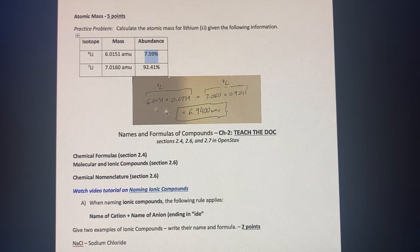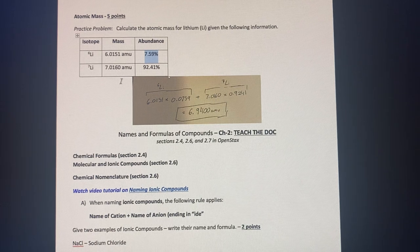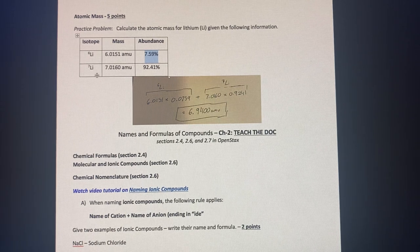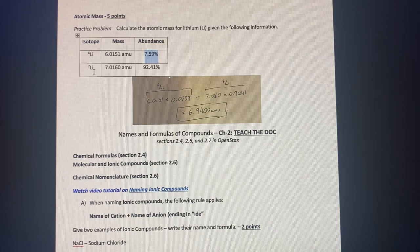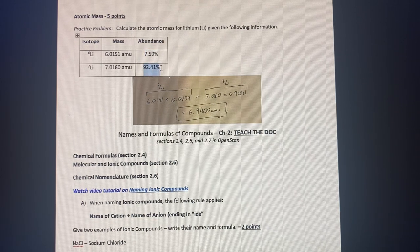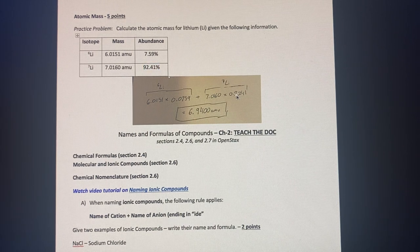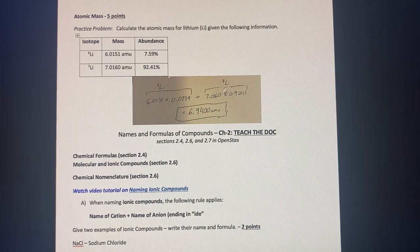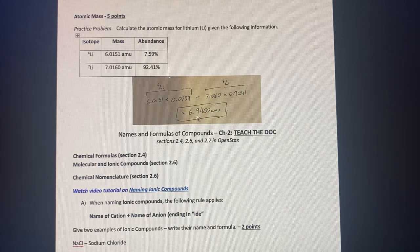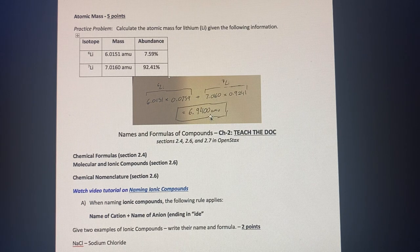And then you add that overall number to the number of the mass of the seven lithium, or the lithium with a weight of seven, the seven isotope. And you multiply it times the percentage divided by 100. So that 0.9241. And that equals 6.9400 atomic mass units, with the proper amount of sig figs.